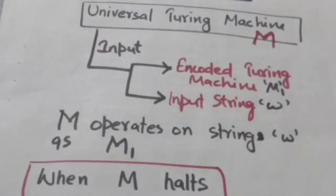If M1 crashes on input string W then M will also crash on input string W. If M1 accepts the string W then M will also accept the string W. If M1 loops forever on input string W then M will also loop forever on input string W.